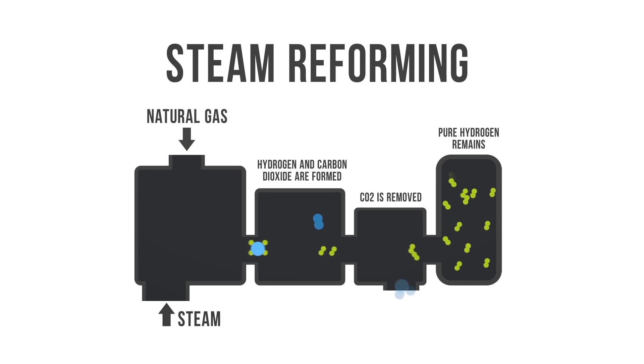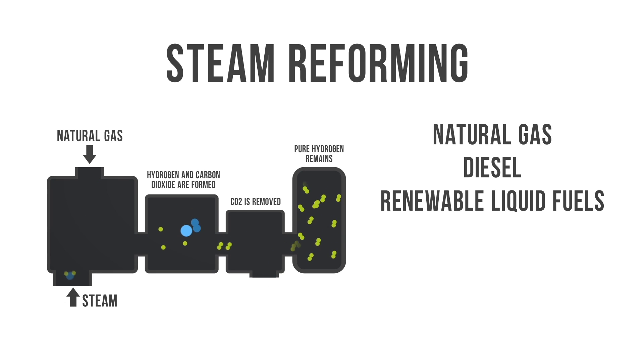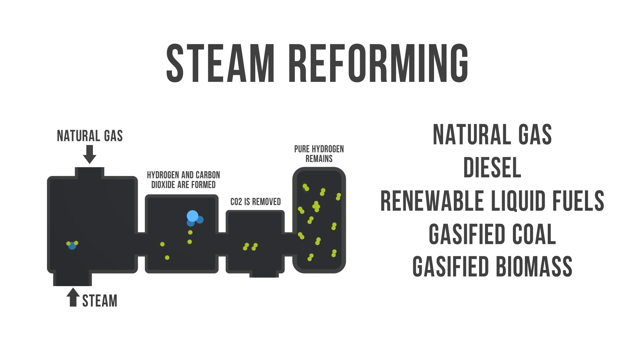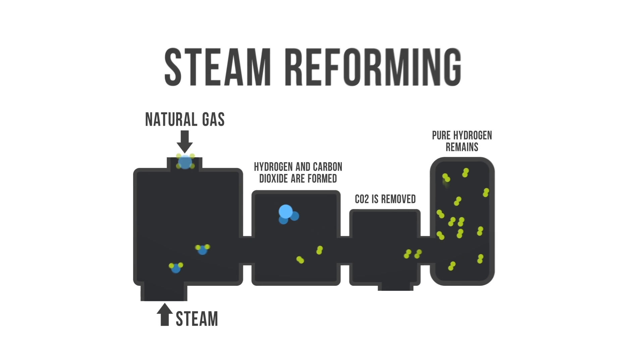Steam reforming is a high temperature process in which steam reacts with a hydrocarbon fuel to produce hydrogen. Many hydrocarbon fuels can be reformed to produce hydrogen, including natural gas, diesel, renewable liquid fuels, gasified coal, or gasified biomass. Today, about 95% of all hydrogen is produced from steam reforming of natural gas.